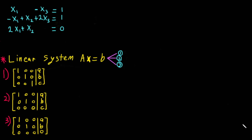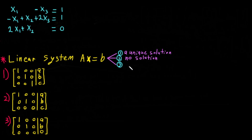Hi guys, let's learn about a linear system. A linear system has three possible solutions. First, it can be a unique solution. Second, it may have no solution. Or third, it can have infinitely many solutions.